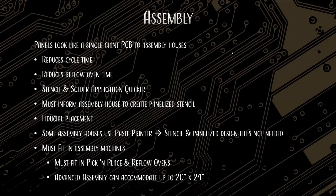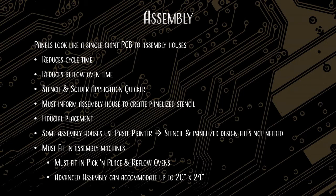What are some of the benefits of using a big panel instead of separating the boards before shipping to the assembly house? Right away it reduces cycle time — we're not routing out every board, just parts of every board and then popping out the array. It reduces reflow oven time — we're working with multiple boards at once. We're able to save a lot of time rather than building one PCB at a time. Stencil and solder application are quicker too. In that last array we had in the beginning, there were 44 boards — we're able to apply 44 stencils at once.